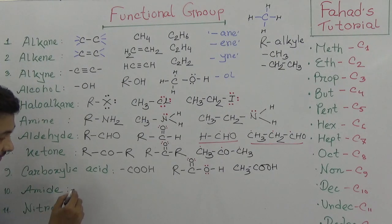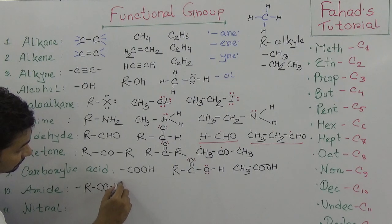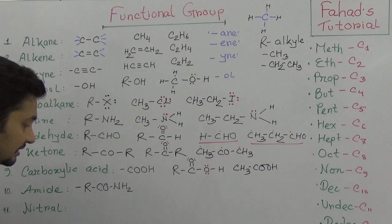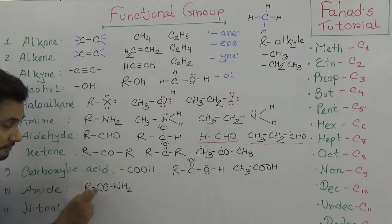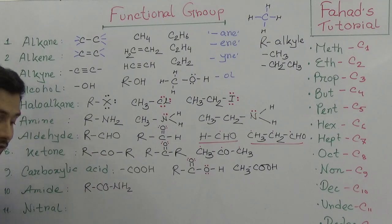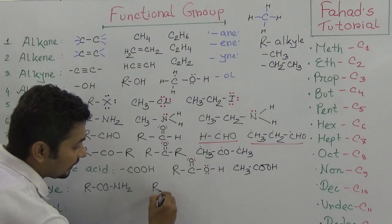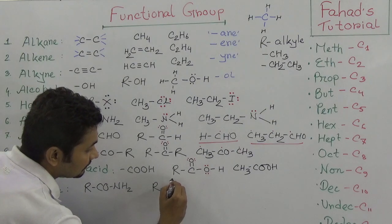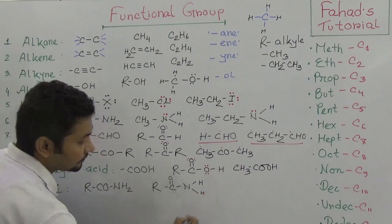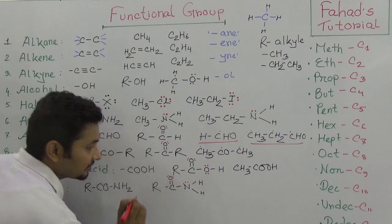Amide has the functional group -CONH2, meaning an alkyl group combined with a ketone group and an amino group together form an amide group. In the Lewis structure there is one lone pair on the carbonyl oxygen and two lone pairs on the nitrogen.